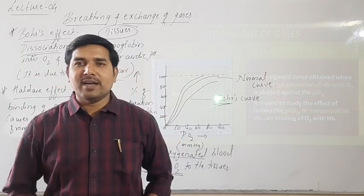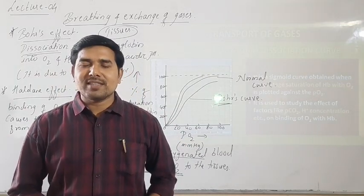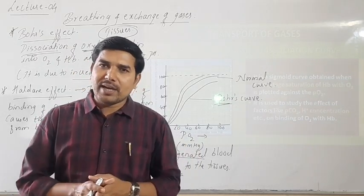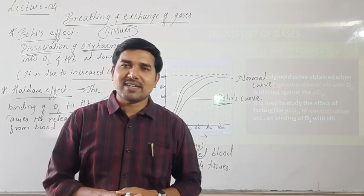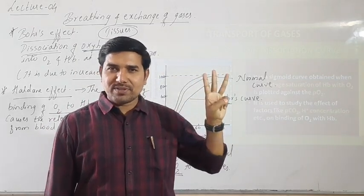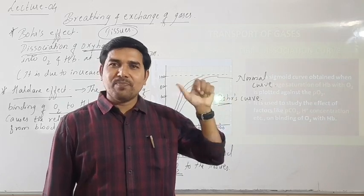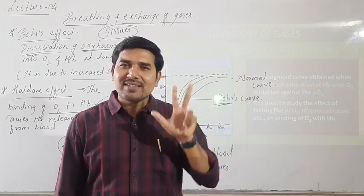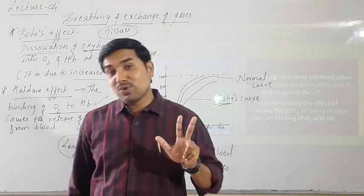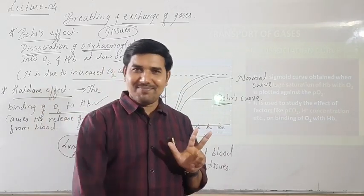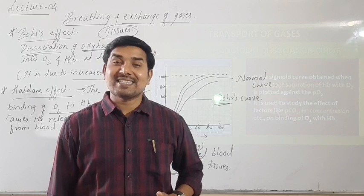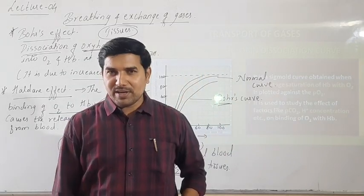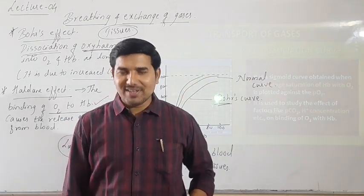In the next part we will discuss the transport of carbon dioxide in an elaborate way. Carbon dioxide is transported majorly in three forms: as carbonic acid, as carbaminohemoglobin, and as bicarbonates. Out of these three, 70% of CO2 is transported in the form of bicarbonates — that is the major form.